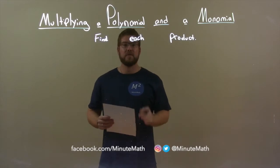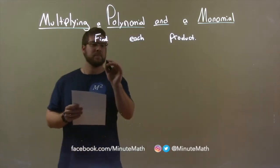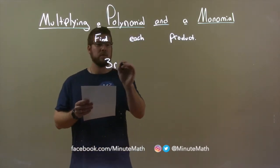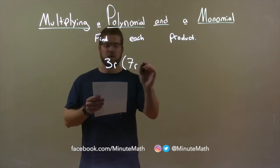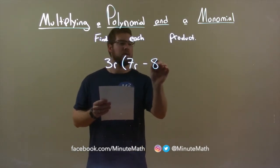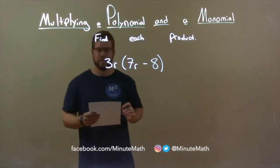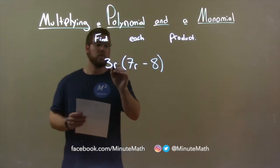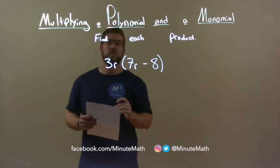So, if I was given this product, 3R times 7R minus 8. Well, I want to take this 3R and multiply it to both terms in the parentheses.